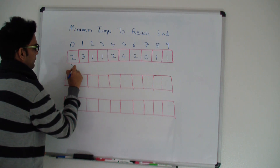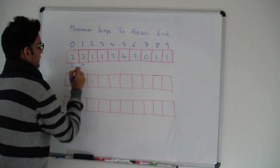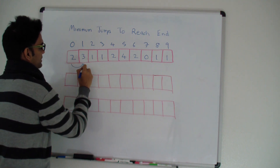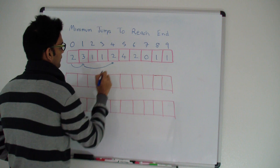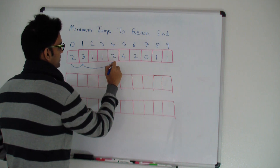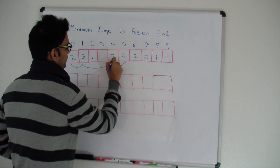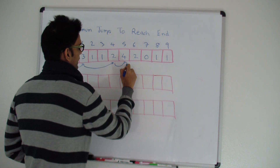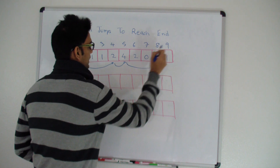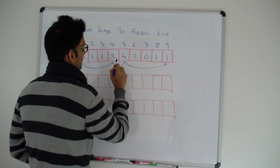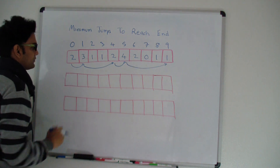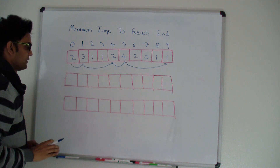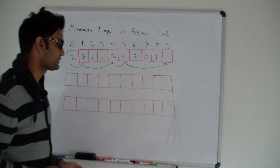For this particular example, I jump one step from index zero to one. From one I jump three steps to reach four. From four I jump one step to reach five, and from five I jump four steps to reach nine. So it took four jumps to reach from zero to nine.